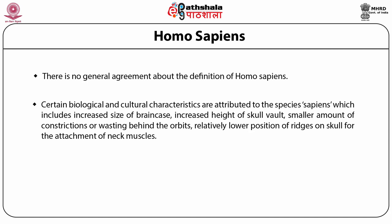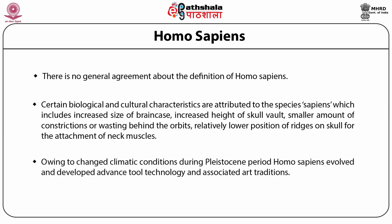Post-cranial features include slender long bones with less articular surface for muscle attachment. Bones are thinner than in Neanderthals. Sockets of femurs are further forward with less powerful grip. Owing to changing climatic conditions during the Pleistocene period, Homo sapiens evolved and developed advanced tool technology and associated art traditions.